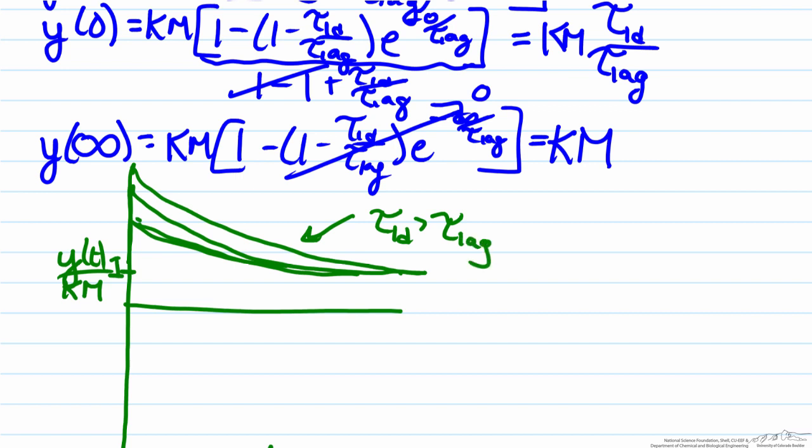When tau lead equals tau lag, what you'll notice in this equation is the fact that this term here will go to zero. So in other words, the process will equal one. And what that means is the fact that the lead and the lag both in some ways cancel each other out.